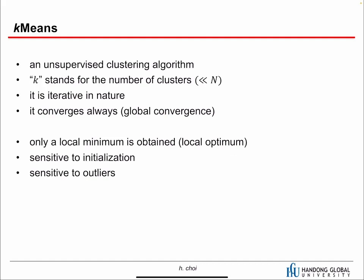K-means is iterative in nature — we iteratively reorganize the clusters. It always converges, meaning it has global convergence, but only a local optimum minimum is obtained. Global convergence means wherever you start, it will converge. It is sensitive to initialization because it starts with random clustering, so every time the result might be a little different. And it is sensitive to outliers, which we will see why.